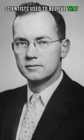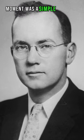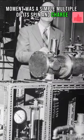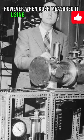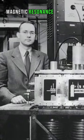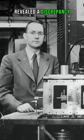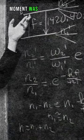Scientists used to believe that the electron's magnetic moment was a simple multiple of its spin and charge. However, when Cush measured it using the molecular beam magnetic resonance technique, it revealed a discrepancy. The electron's magnetic moment was stronger than predicted.